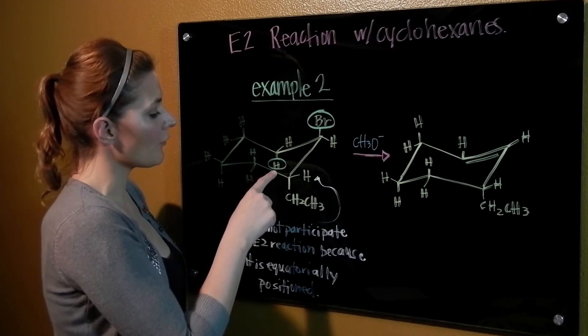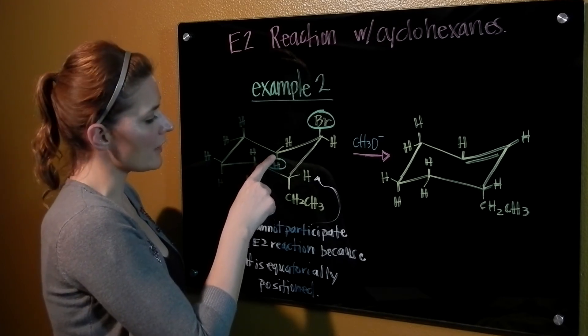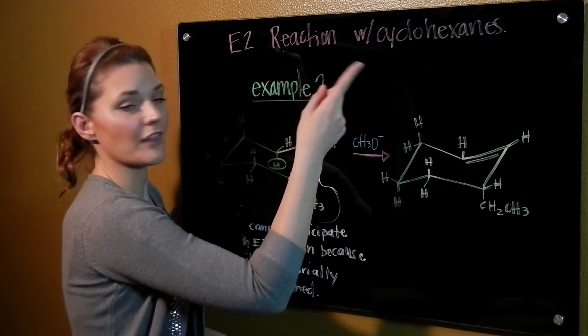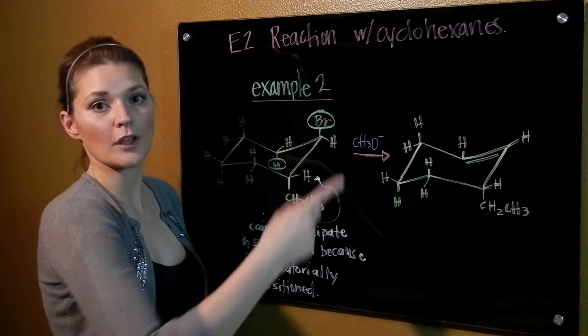So our base will come, pull off this hydrogen. That bond there will then collapse into the double bond that we have. And the bromine group will get kicked off.